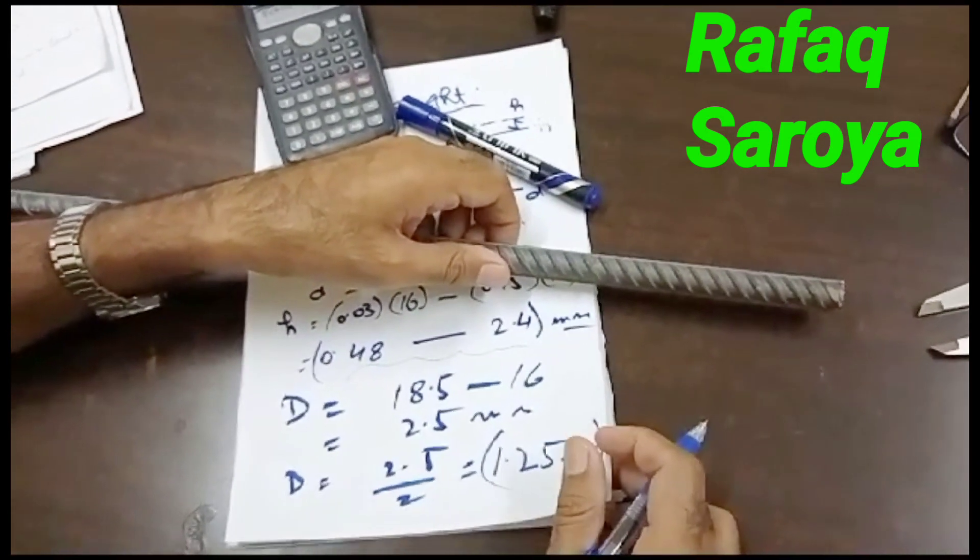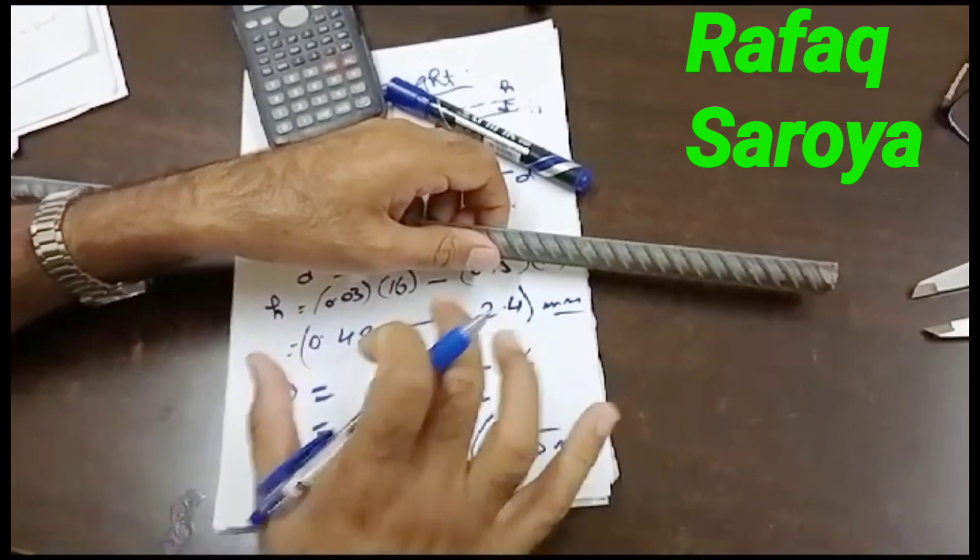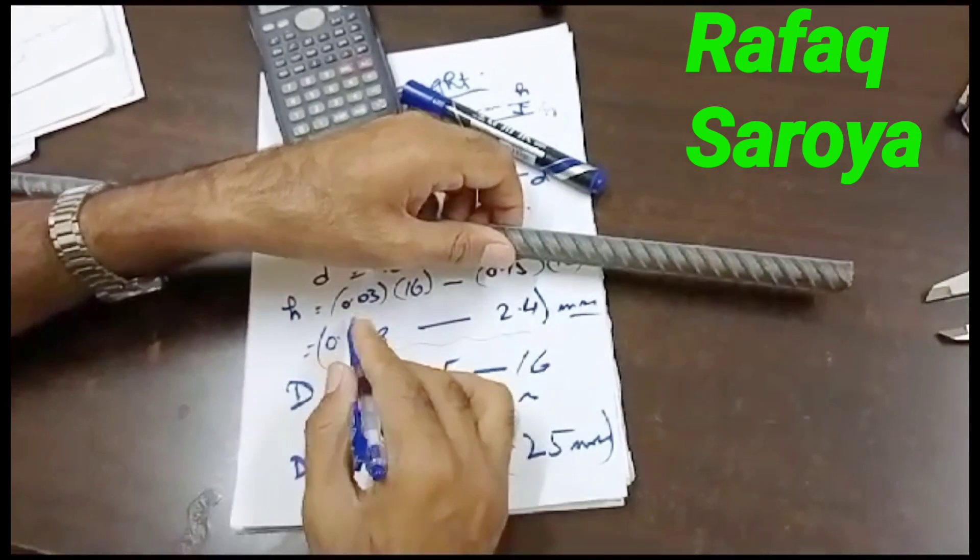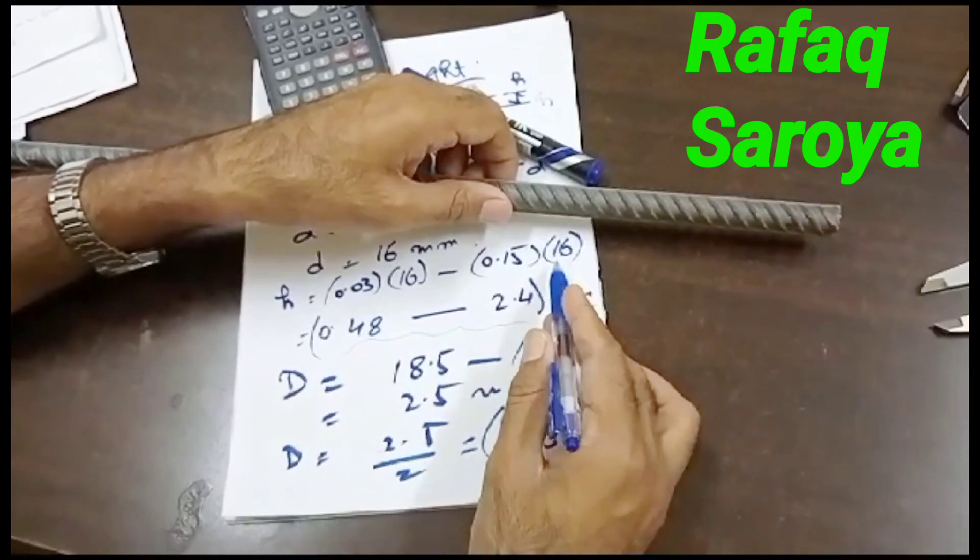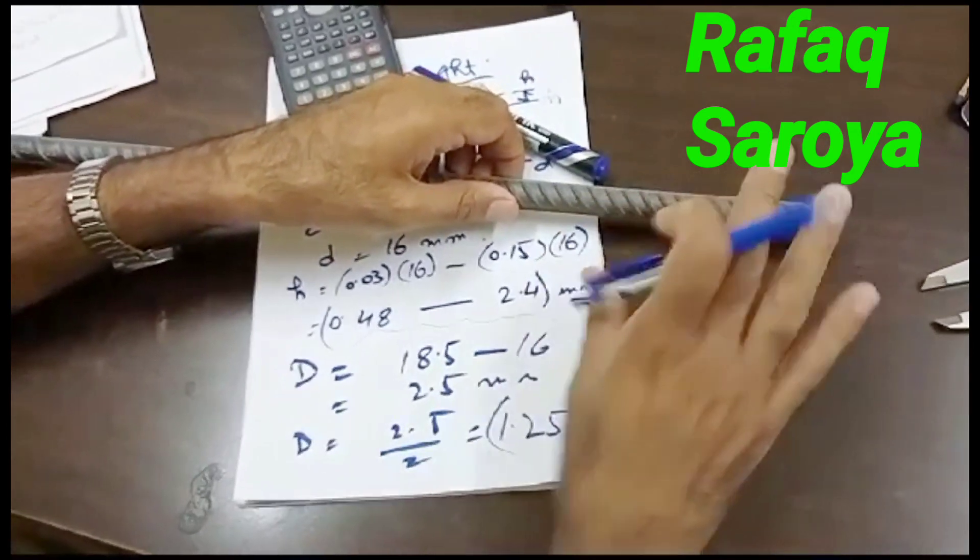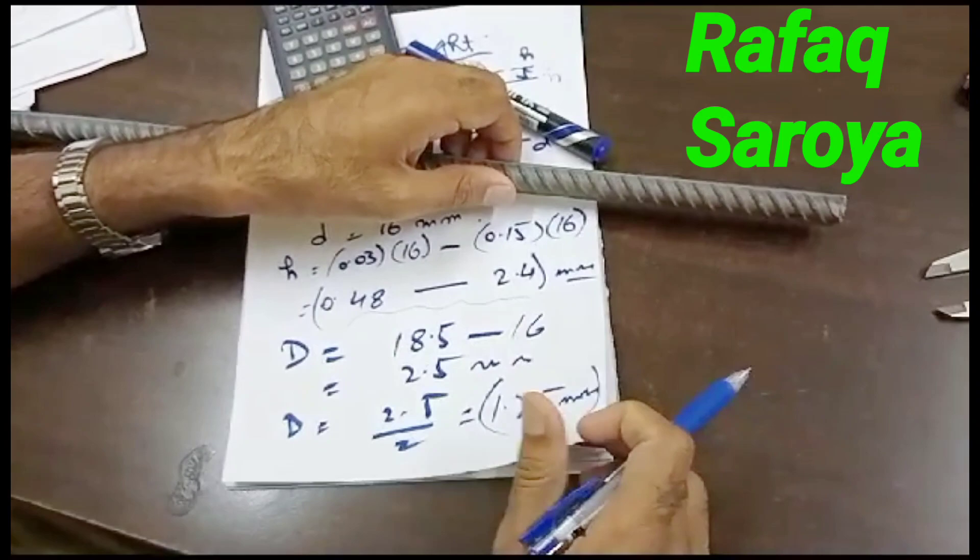So it is just for your introduction that if someone will say to you in a question or in an interview, what is the height of the rib? Its answer is it is not a constant quantity, and it varies by formula 0.03D and 0.15D, and we will deal with the diameter. This I have given you one example. Thank you very much for seeing this.